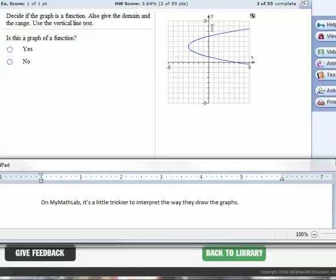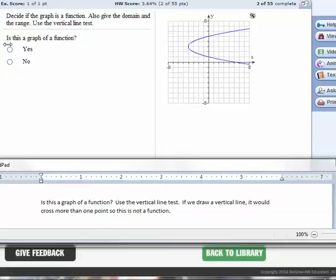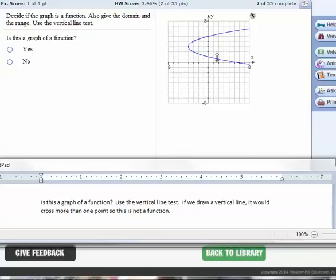On MyMathLab, it's a little trickier to interpret the way that they draw the graphs, so let's take a look at one of those. Is this the graph of a function? Well, we use the vertical line test. If we draw a vertical line, it would cross more than one point at a time. So this graph is not a function.